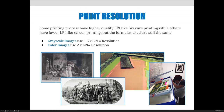Some printing processes have higher quality LPI, like gravure printing, while others have lower, like screen printing. But the formulas used are still the same. You're still going to use one and a half times the LPI to calculate the resolution of a grayscale image, and two times the LPI to calculate the resolution of a color image. You'll just start with bigger or smaller numbers.